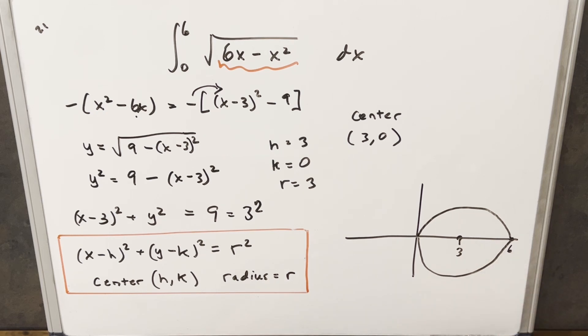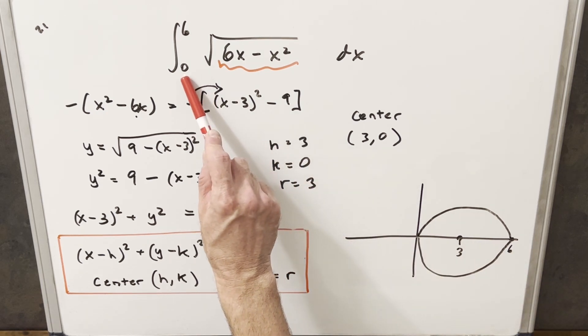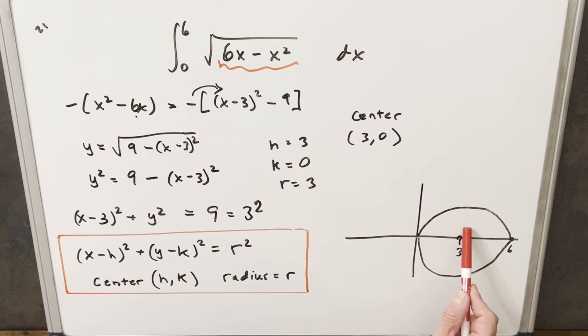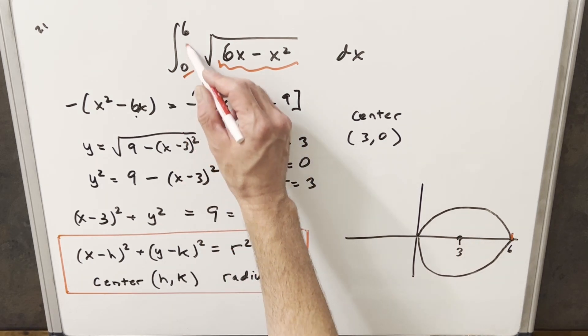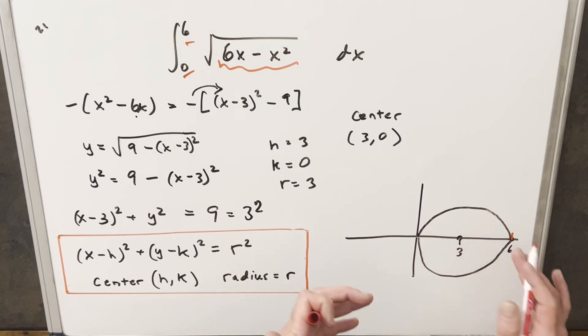And then a couple important things to notice. We need to go back and look at our bounds on our integral, because that's important. We're going to want the area under this curve, but we still have to observe the bounds. So because our bounds are 0 and 6, that's nice, because then we're just looking for the area under the circle.